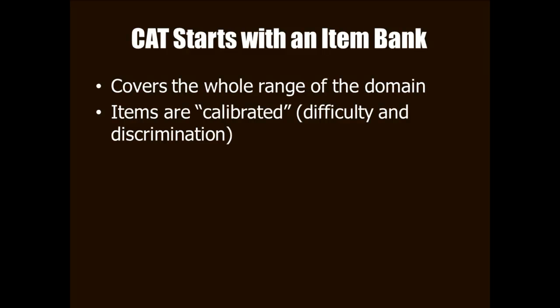Computer adaptive testing starts with a bank of items. A bank of items is a collection of items that covers the entire range of the trait that you're interested in measuring. And all the items of that bank are calibrated to an item response theory model. That is, all the items have been modeled using IRT's probability equations. So if it's a Rasch model that's being used, all the item difficulties have been estimated. If a two-parameter model is being used, both the difficulties and the discrimination of all the items have been modeled.